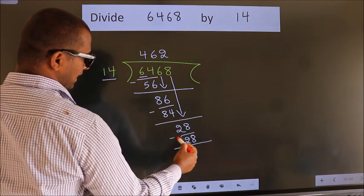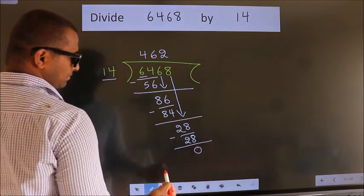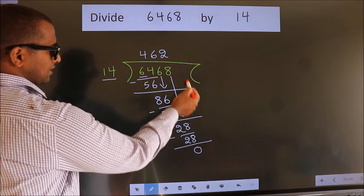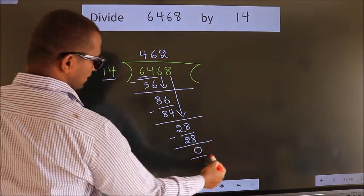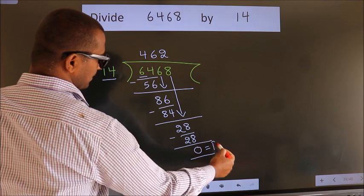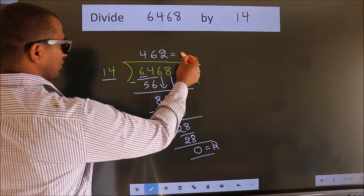Now we subtract and get 0. No more numbers to bring down, so we stop here. This is our remainder, and this is our quotient.